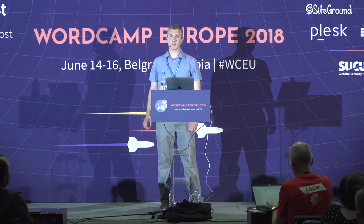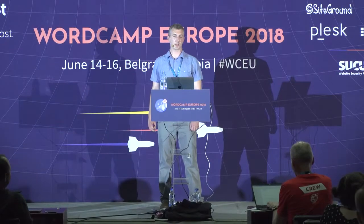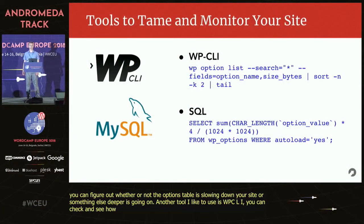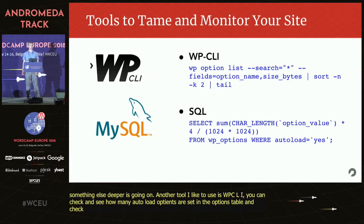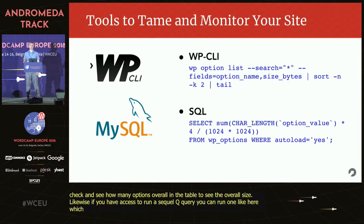Another tool I like to use is WP-CLI. By running a command like the one here, you can check and see how many autoload options are set in the options table, and also how many options overall to see the total size. Likewise, if you have access to run a SQL query on your server, you can run a query like the one here which will tell you pretty much the same information.